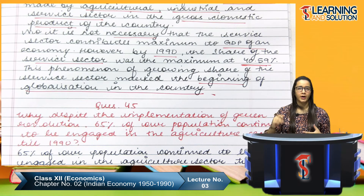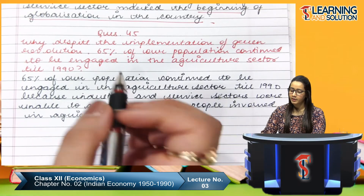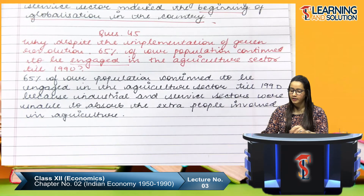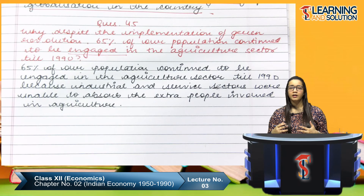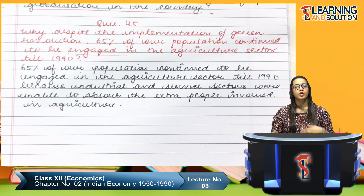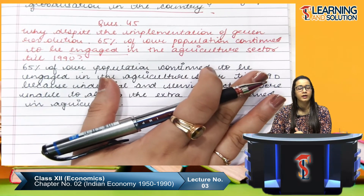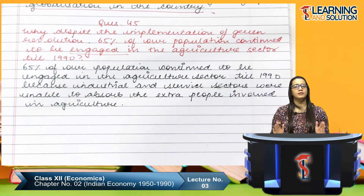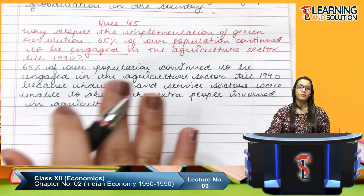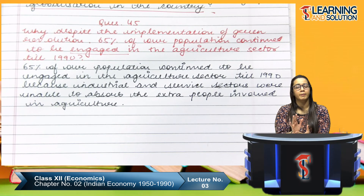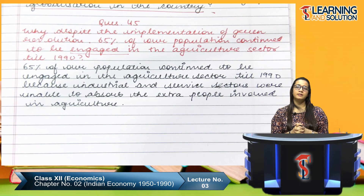What is the sectoral composition of an economy? It refers to the contribution made by the agricultural, industrial, and service sectors to the GDP. By 1990, the share of the service sector was the maximum at 40.59%, marking the beginning of globalization in the country. Despite the green revolution, 65% of the population continued to be engaged in agriculture because the industrial and service sectors did not generate sufficient employment. Thank you for attending this class.